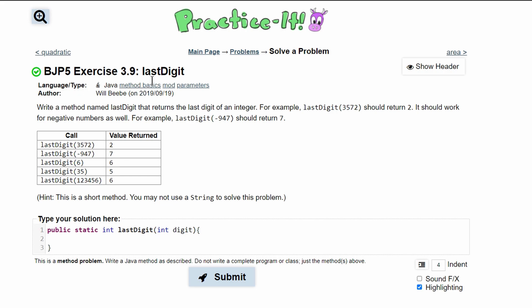Practice-It exercise 3.9 lastDigit. We are asked to write a method named lastDigit that returns the last digit of an integer. We are going to take a parameter int digit and we need to return the last digit of that integer.